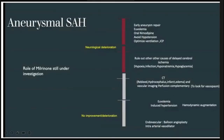In summary: the first and foremost step in every aneurysm is early repair and maintenance of euvolemia. Oral nimodipine should be started in all patients. Patients should avoid hypotension and raised ICP should be prevented. Once neurological deterioration occurs, other causes such as hypoxia, hyponatremia, and hypoglycemia should be ruled out with CT. Once delayed cerebral ischemia is diagnosed, euvolemia and induced hypertension should be done with hemodynamic augmentation. Milrinone or other IV treatment can be given, and when there is no improvement, endovascular treatment with balloon angioplasty or intra-arterial vasodilators should be performed.